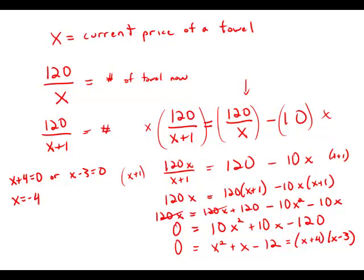x equals negative 4. Well, that doesn't make sense for the price of a towel. So we won't use that. x equals 3.